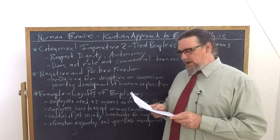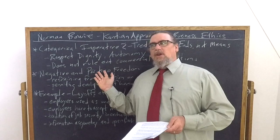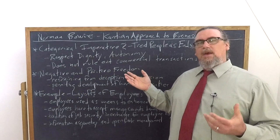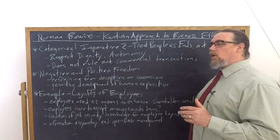And Bowie is going to point out that it's very important to acknowledge and distinguish between negative and positive freedom. So for Kant, negative freedom is going to involve, at the very least, refraining from deception or coercion in how we treat other people. And those are very broad terms that include a lot.